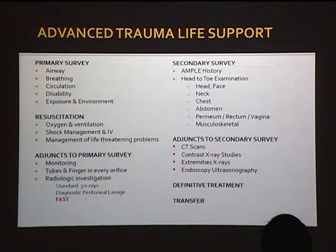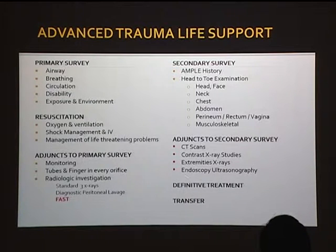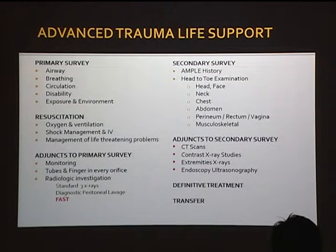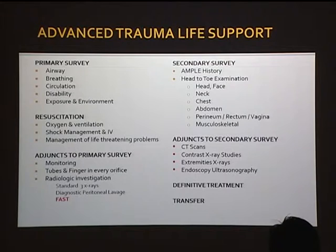Then, followed by reassessment, you can add on things that will help you in the primary survey. After you have stabilised the patient, you proceed to the secondary survey, where it's a top-to-toe examination. Many of these adjuncts are important for secondary survey, but you also know that some of these scans or studies have now become favoured and are being pushed very early in the assessment.